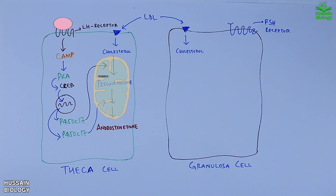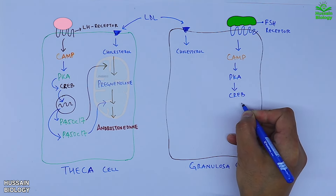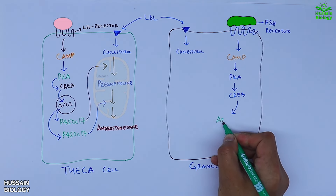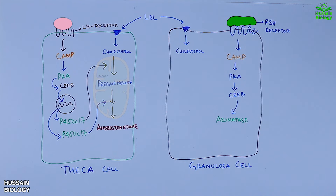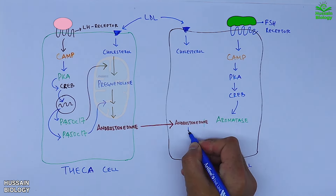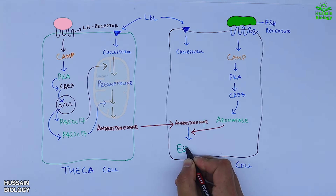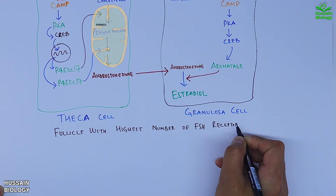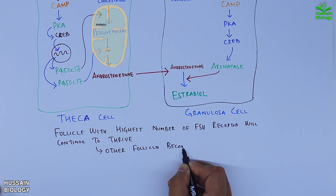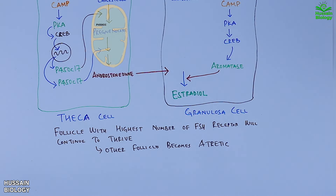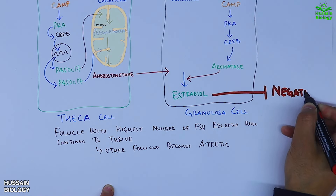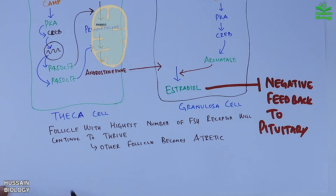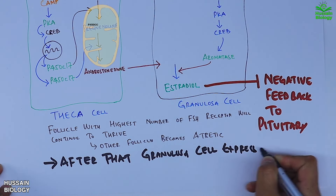The granulosa cell receives FSH on its receptor, driving the cAMP pathway, activating CREB, which goes to the nucleus and drives transcription of the aromatase enzyme. The androstenedione from the theca cell is transported to the granulosa cell, where aromatase converts it into estradiol — the primary estrogen produced. The follicle with the highest number of FSH receptors continues to thrive while others become atretic. Estradiol sends negative feedback to the pituitary to suppress further FSH and LH synthesis, and granulosa cells also begin to express LH receptors.